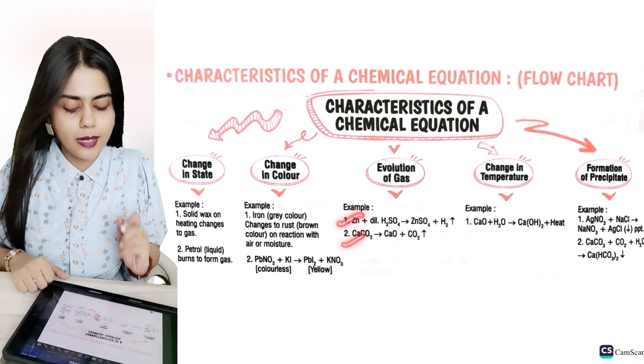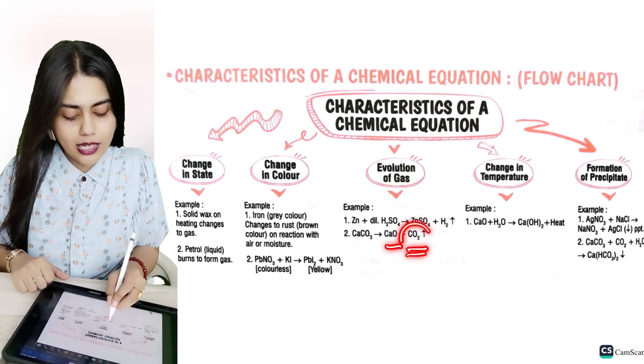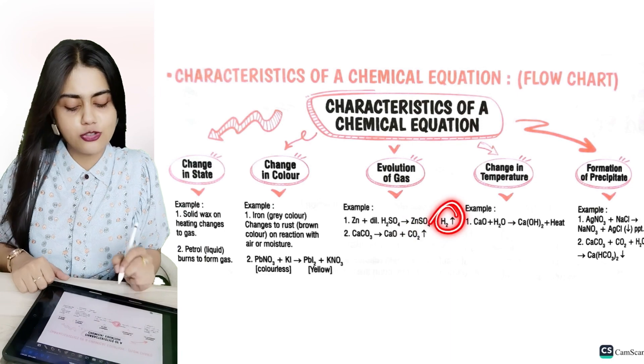For example, if we talk about calcium carbonate, how do we split it? CaCO3 becomes CaO plus CO2. Here CO2 gas is removed, and here H2 gas is removed. You can see.